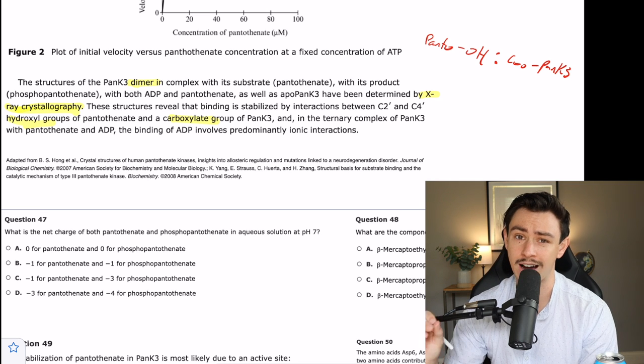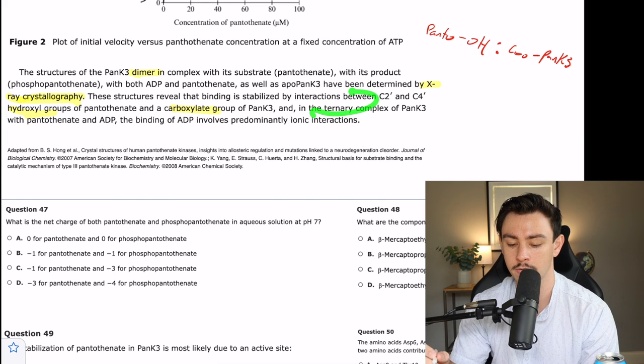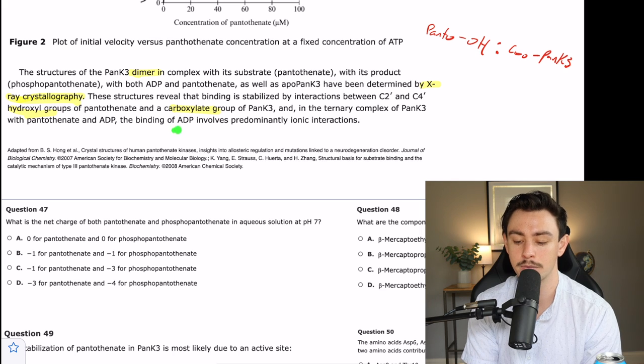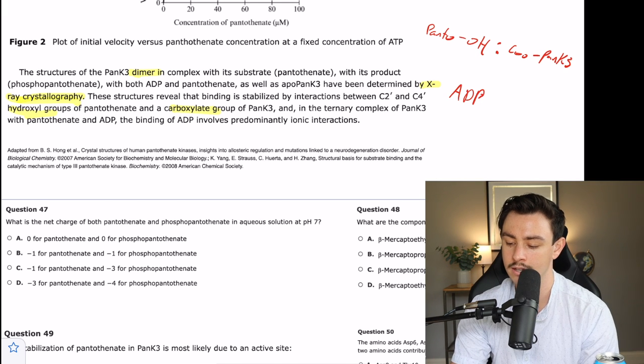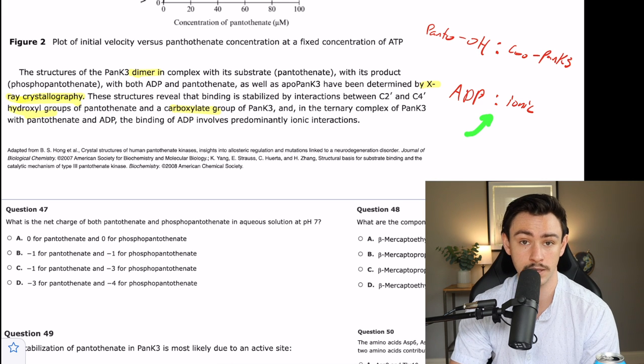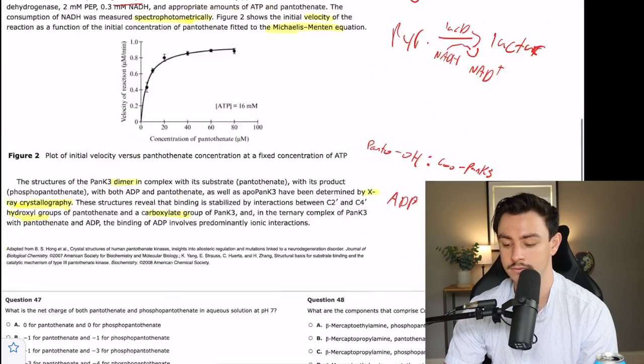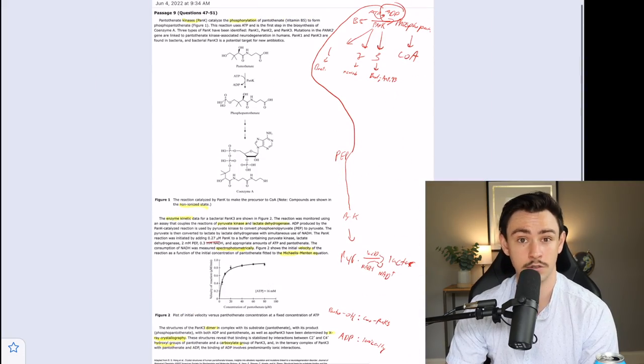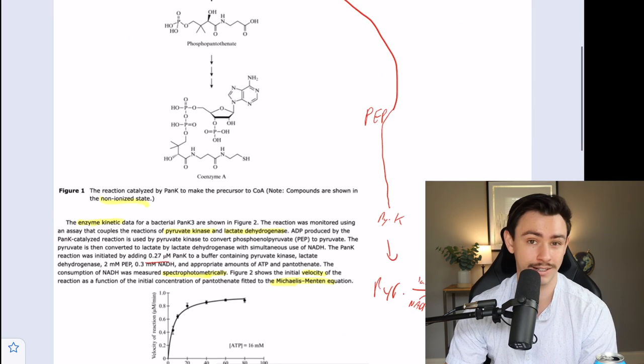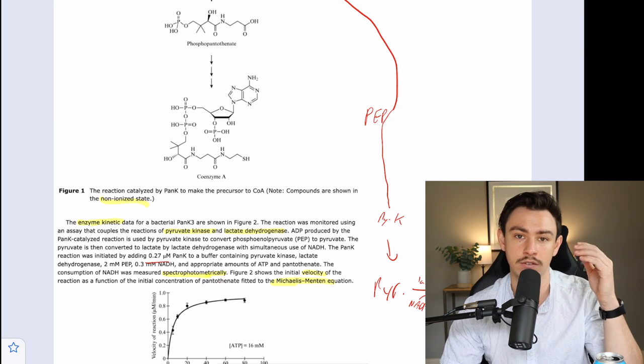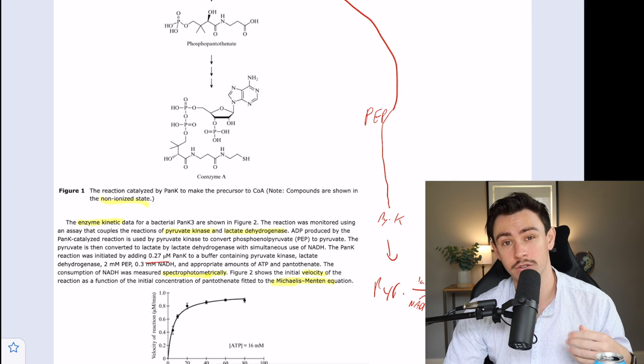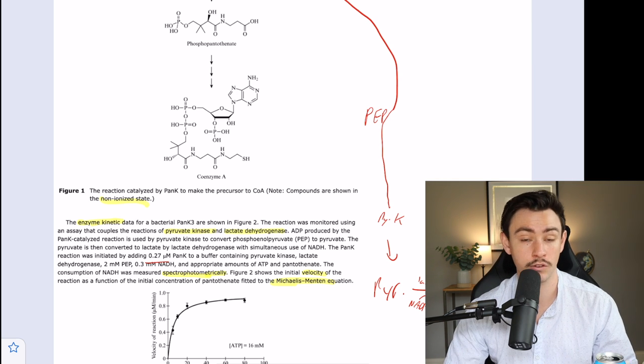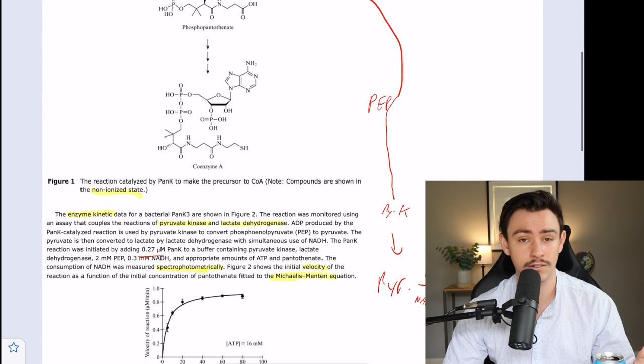They're just looking at the structures of these things and maybe they're going to try to compare size differences or some form of charges holding them together or something like that. Let's keep reading to see if they give us any hints. These structures reveal that binding is stabilized by interactions between C2 and C4 hydroxyl groups of the pantothenate and a carboxylate group of panK3. So I'm going to start a new flowchart here. Pantothenate has a hydroxyl group that binds to a carboxylate group of panK3. They were really specific with it and they use functional groups and functional groups are pretty high yield. So that's making me think they're going to ask us either something about the organic chemistry of it, maybe the amino acids that make them up. We're going to go ahead and note that. And then in the ternary complex of panK3 with pantothenate and ADP, the binding of ADP involves predominantly ionic interactions. So ADP binds ionically. That's a flowchart and a half, right? Let's go ahead and take a look at the questions.